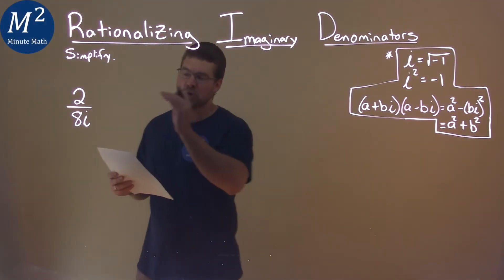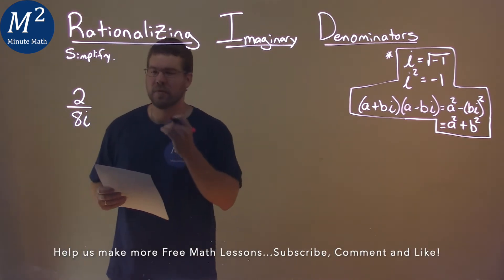We're given this problem right here, 2 over 8i, and we need to simplify this.